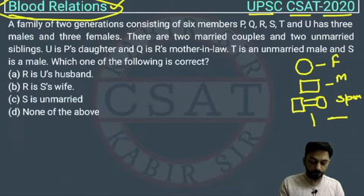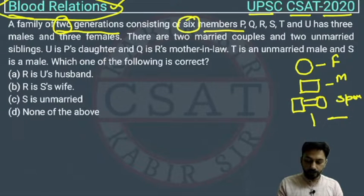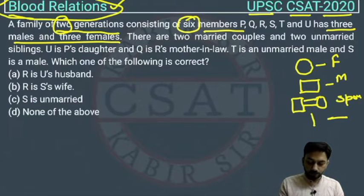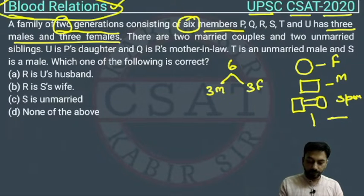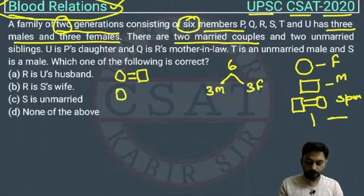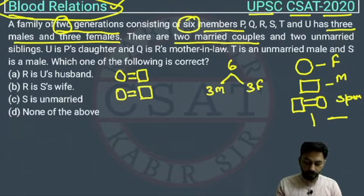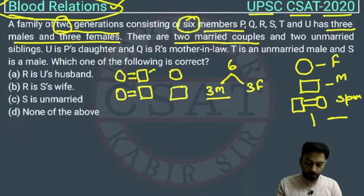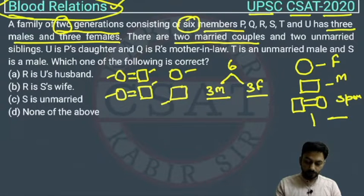Let us read the question. There is a family of two generations consisting of six members P, Q, R, S, T, U — with three males and three females, and there are two married couples. So the two married couples account for two females and two males, leaving one male and one female remaining — making three males and three females total. So we have two married couples and two unmarried siblings.